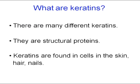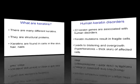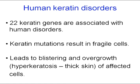As Peter gave us a brief introduction to keratins, there are many different keratins — at least 54 that we know of — and these are structural proteins. Keratins are found in particular in cells in the skin, hair, and nails, so these are the tissues that are affected by PC. We know that at least 22 keratin genes are associated with different human disorders, so PC really belongs to a family of disorders due to mutations in different keratin genes. All of these result in some form of cell fragility, which leads to blistering and overgrowth and thickening of the skin of the affected cells.